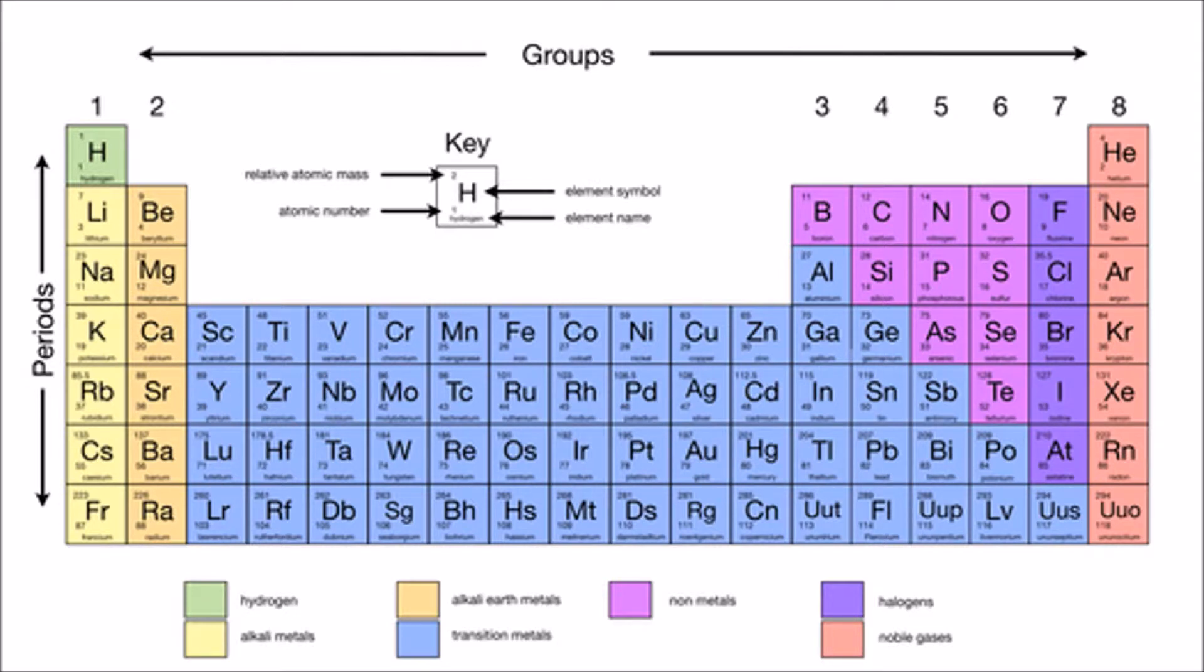Elements in the same groups have similar properties due to the fact that they have the same amount of electrons on their outer shell, which will influence how reactive they are and whether they'll ionically bond or whether they will covalently bond.